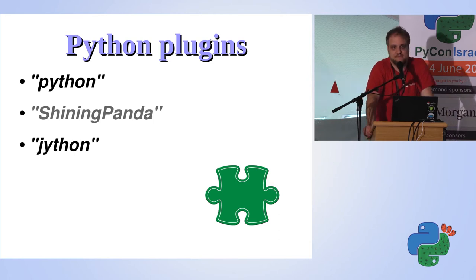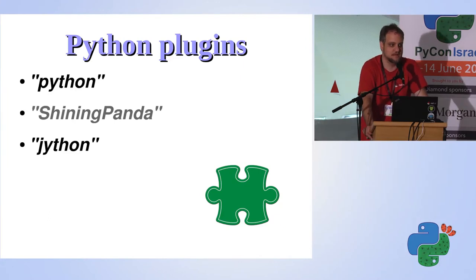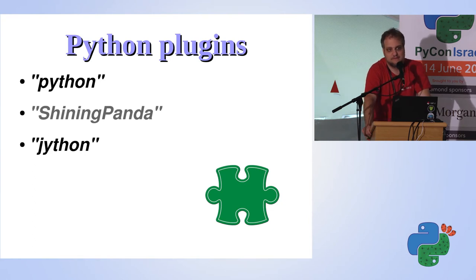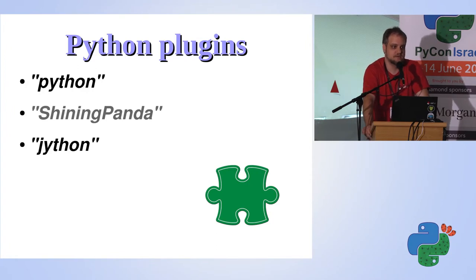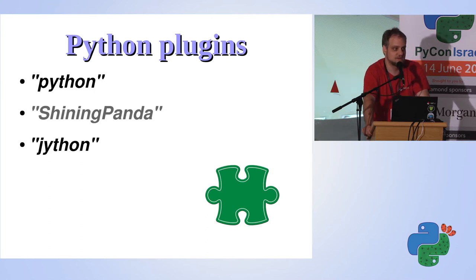Everything in Jenkins happens in plugins, so you have multiple plugins you can use to run Python from Jenkins. You have the Python plugin, which gives you a text box you can type Python into and it will run it. You have the Shining Panda plugin, which is a bit more complicated — it can run virtual environments and invoke tox. And you have the Jython plugin, which is very similar to the Python plugin but runs the Jython interpreter instead.